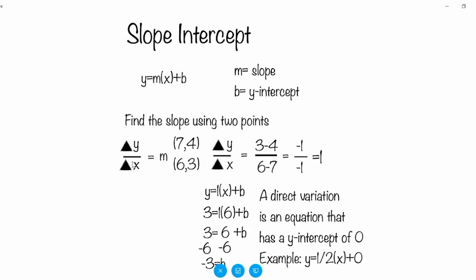Delta means you take the final minus the initial. So in this example you can see I have the coordinates seven and four, and then six and three, and I used the last minus the first — so I have three minus four over six minus seven. And then it ends up equaling negative one over negative one, which equals one because two negatives.